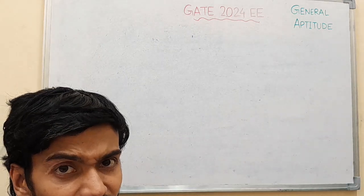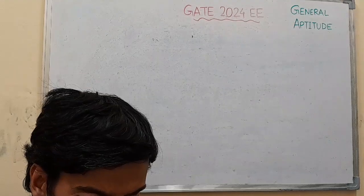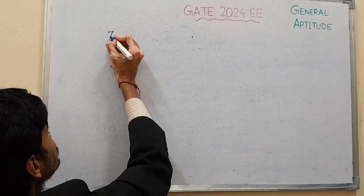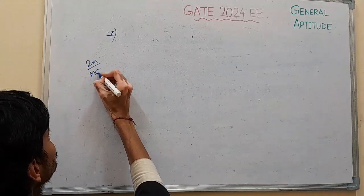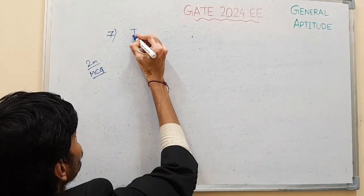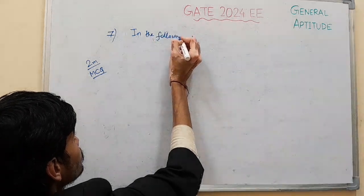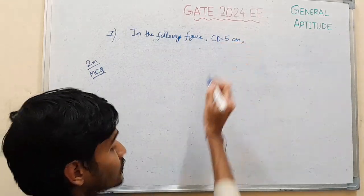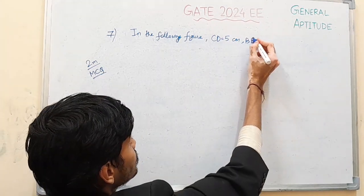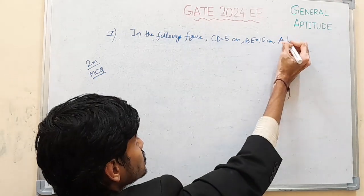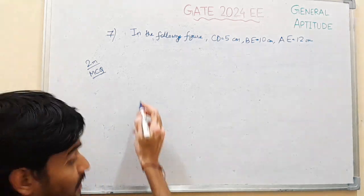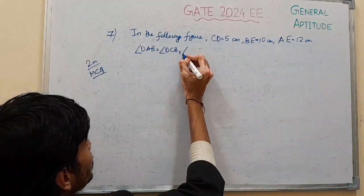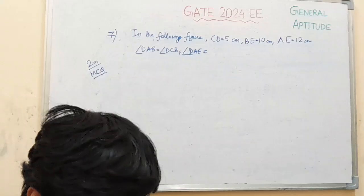So this is the next question we will discuss. This is of 2 marks, MCQ type, question number 7. The question is as follows: In the following figure, CD is equal to CB, and angle DAE equal to angle DBC equal to 90 degrees.